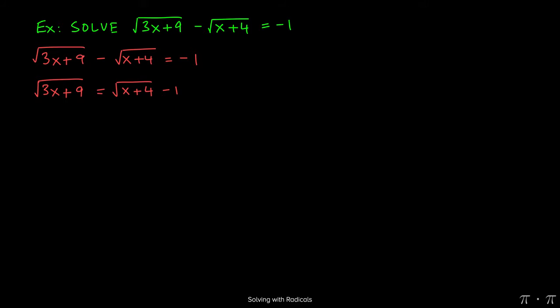Now at this stage we can square both sides since we have a single radical on each side of the equation. Doing so results in squaring square root of 3x plus 9, which gives us just 3x plus 9.